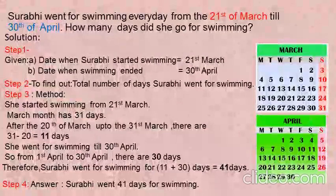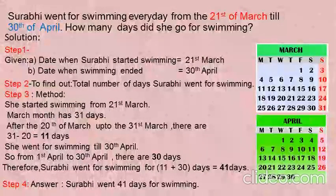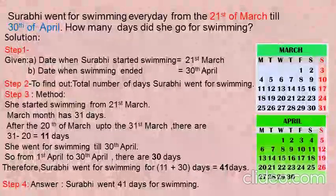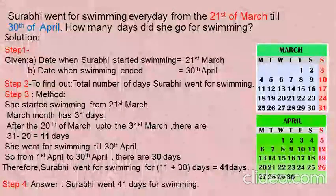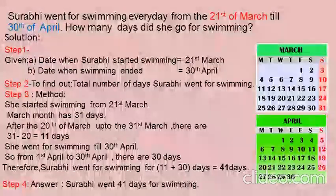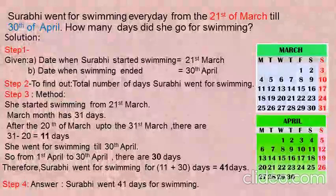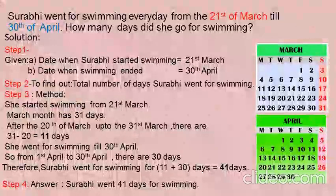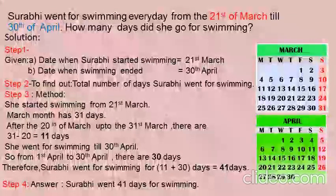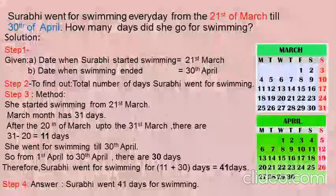Solution: Step 1 — Given date when Surabhi started swimming is 21st of March; date when swimming ended is 30th of April. Step 2 — Find out total number of days Surabhi went for swimming. Step 3 — Method: March has 31 days. So from 21st of March up to 31st of March there are 11 days (31 minus 20 equals 11 days). From 1st of April to 30th of April there are 30 days. Therefore, Surabhi went for swimming for 41 days: 11 days of March plus 30 days of April equals 41 days.